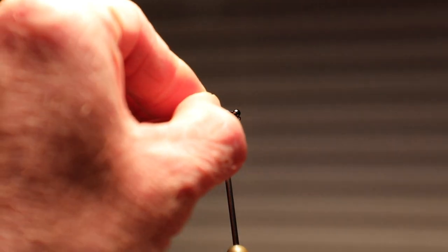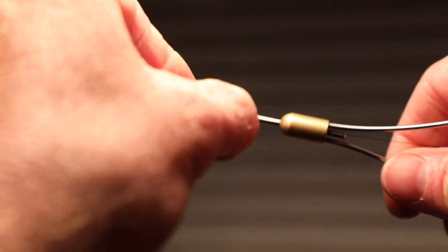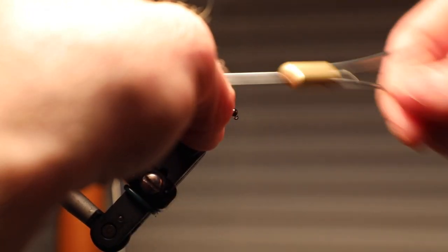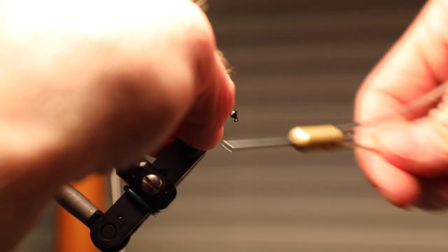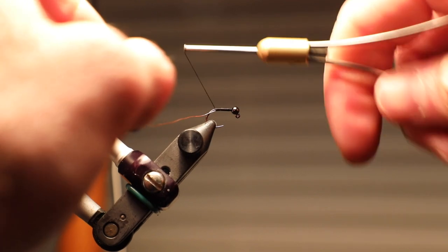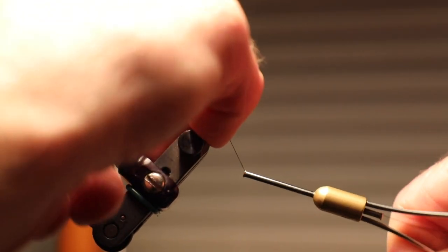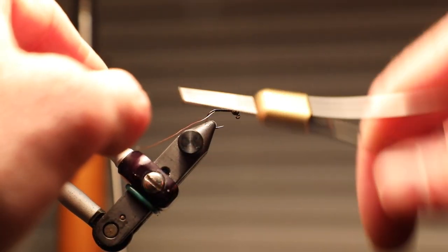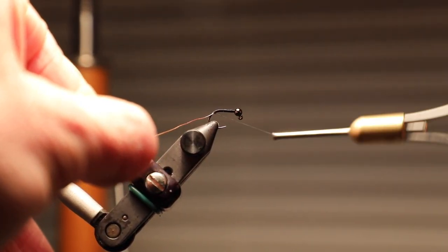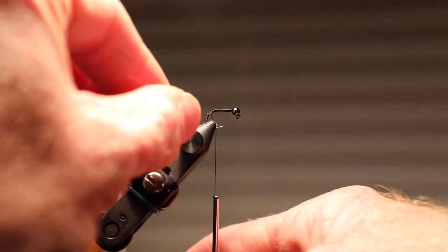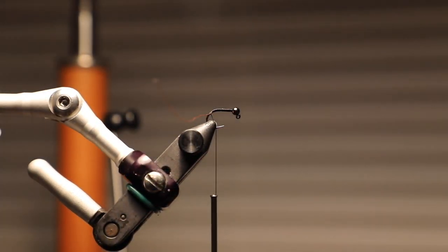I'm gonna tie in my wire right here and wrap that forward. I'm using just some cheap copper wire I picked up at Hobby Lobby, but you can use ultra wire. Small would work real fine. Brassy would probably be fine. I'm gonna go down just a little into that bend. Just give it just a little bit of shape.